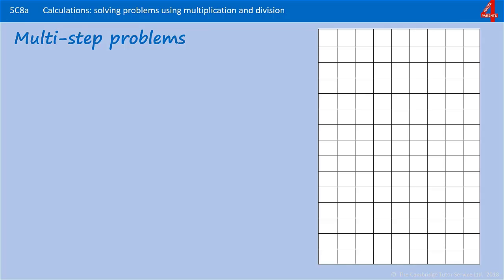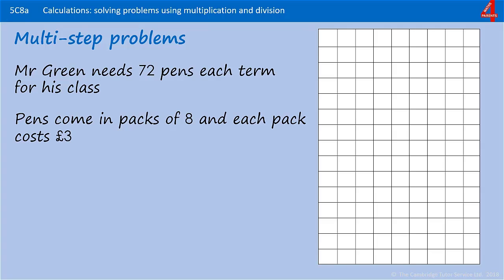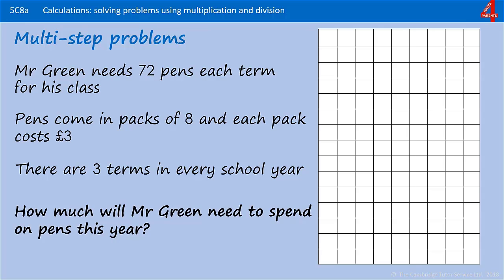This time we need to do something a little bit different. Mr Green needs 72 pens each term for his class. Pens come in packs of eight and each pack costs three pounds. There are three terms in every school year. How much will Mr Green need to spend on pens this year? The question we need to answer is how much he spends — not how many pens he buys — and we need to know how much he spends in the year.